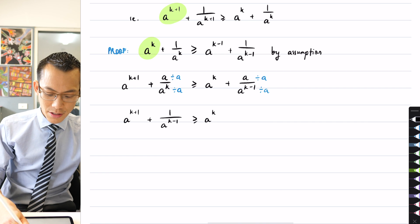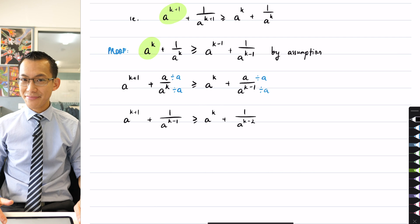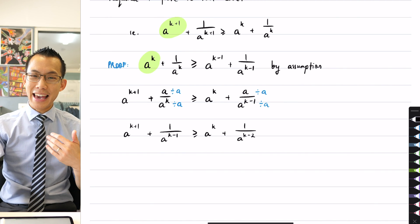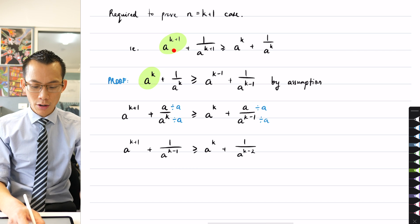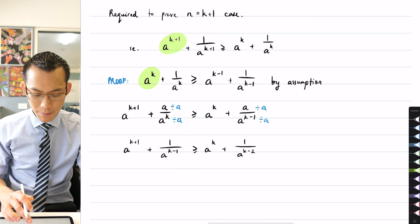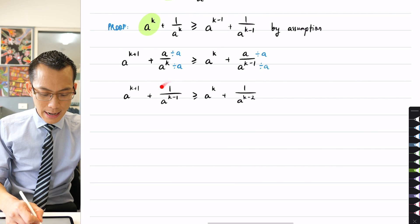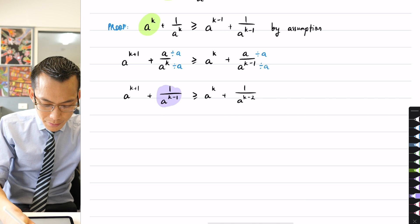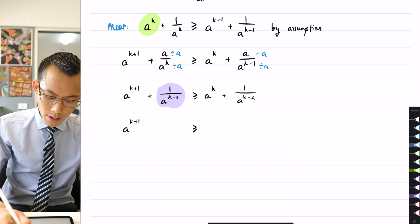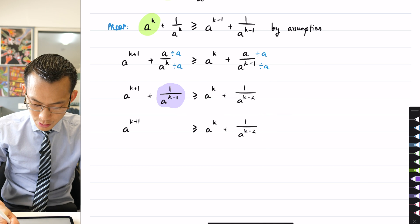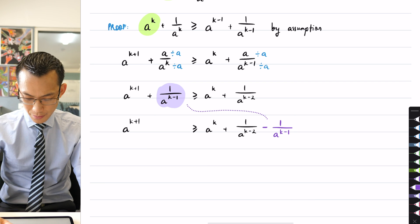Drawing this out into two and a half lines is my way of making sure I get these indices correct — a very common error to make. I'm going to do the same thing on the right-hand side. You can see I'm going to get a 1 on the numerator, and then this a to the k minus 1 divided by a gives you k minus 2. Now, at this point, what I want to do is move toward what I've got in my k plus 1 case. I've already got this a to the k plus 1, so I can tick that off, but I'm missing a 1 over a to the k plus 1 and I've got this other term instead. So I'm going to do two things at once.